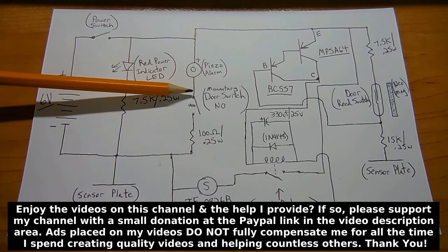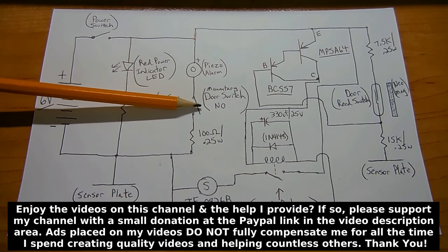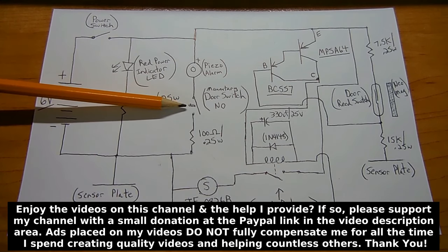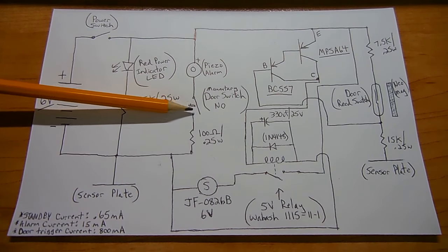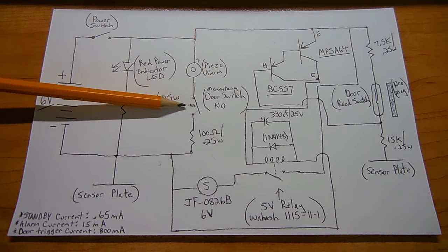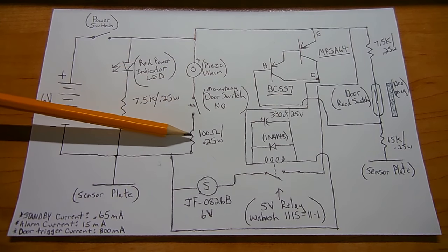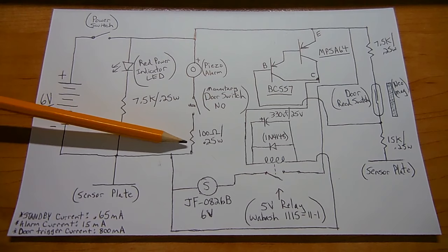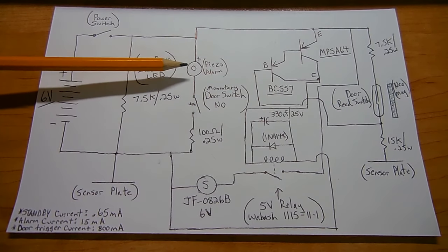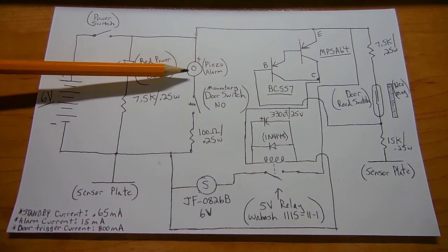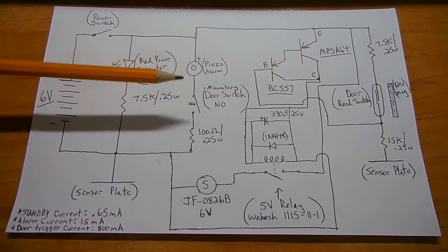After that alarm, it goes to the momentary door switch, normally open, which is the one on top of the unit that I showed you. When the door goes down, it pushes the switch closed, turning on the alarm. Other side of the switch goes to a 100 ohm, quarter watt resistor. The purpose of that is to reduce the output of this alarm, so it's not as loud.